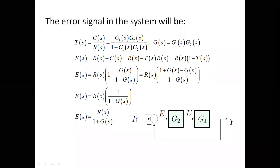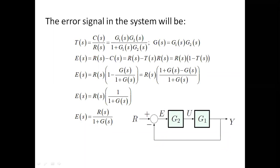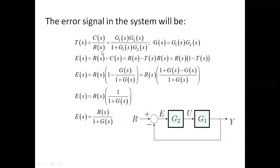Since everything is discussed in terms of Laplace and we work in the s-domain, we will analyze steady state error in the s-domain as well. Consider a system with forward transfer function G(s) = G1·G2 placed in a unity feedback configuration. R is the reference input and e is the error, which equals r minus the output. For simplicity, G1·G2 has been substituted with G.